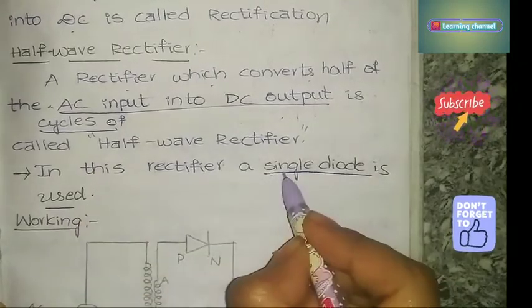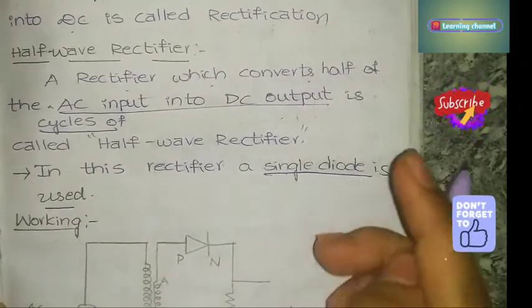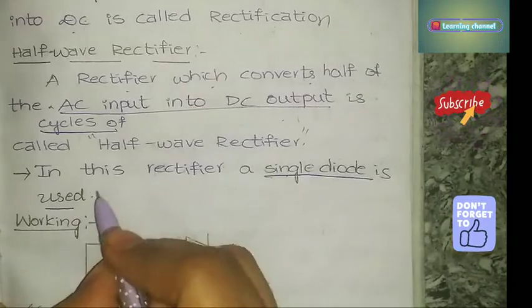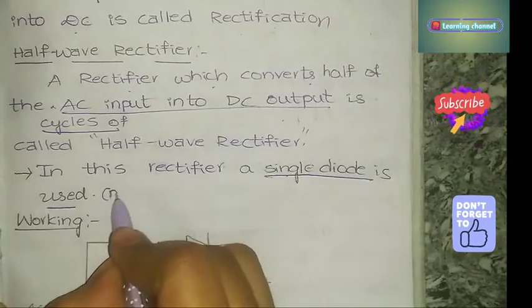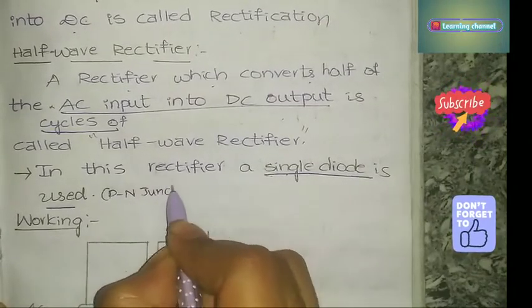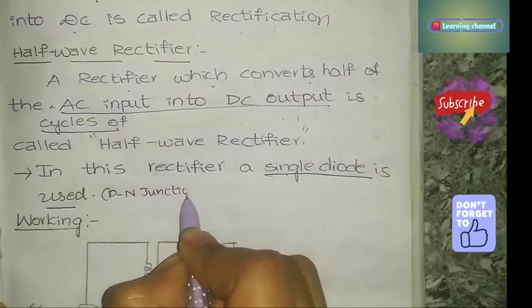An important point: in a half-wave rectifier, only a single PN junction diode is used.